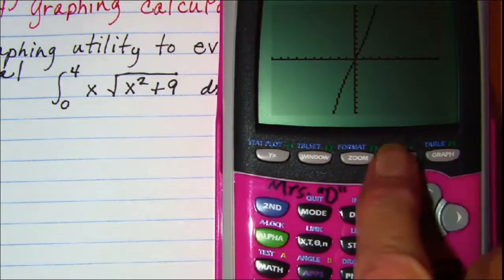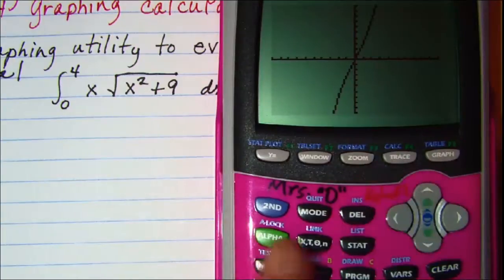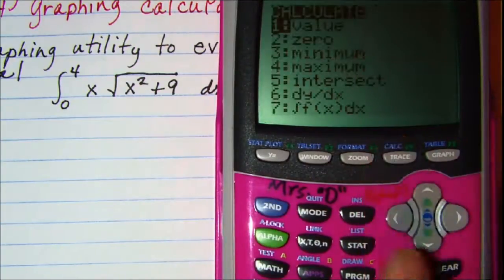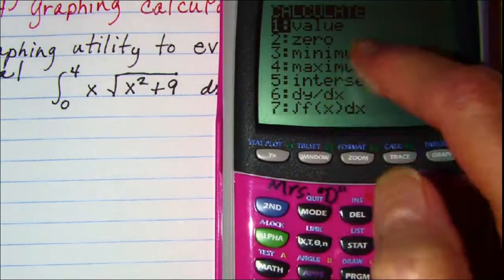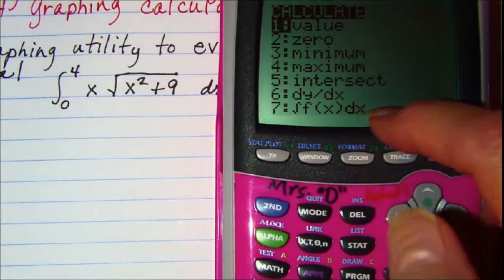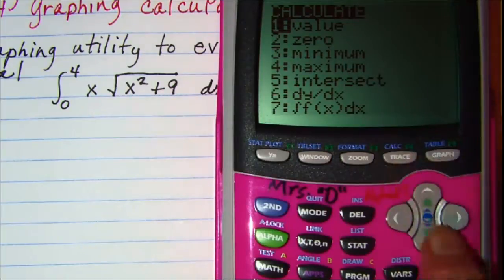This gives us the calculate menu. Press 2nd trace and you'll notice the 7th option is the integral option. You can either move down using the cursor keys or just press 7.